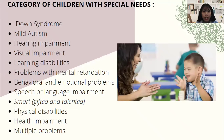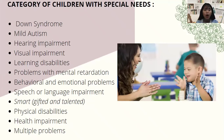These are the categories of children with special needs: Down syndrome, mild autism, hearing impairment, visual impairment, learning disabilities, problem with mental retardation, behavioral and emotional problems, speech or language impairment, smart or gifted and talented, physical disabilities, health impairment, and multiple problems.